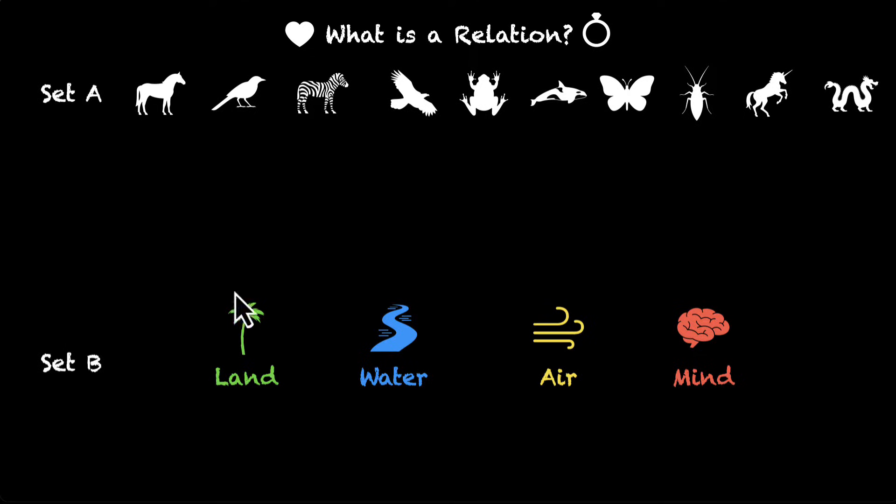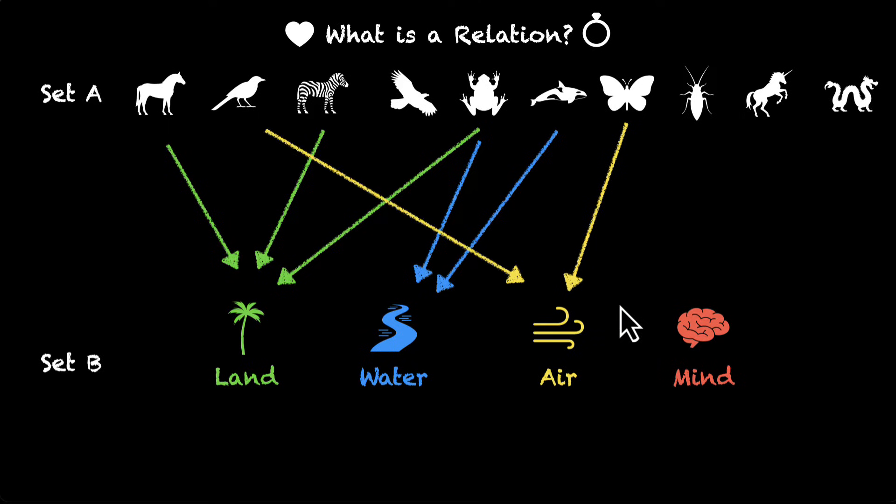And now let's relate set A to set B. We can do this by saying that the horse lives on land. Zebra also lives on land. Frog lives on land and water. Fishes are in water. Butterfly, air. Another bird, air. Another bird, air.